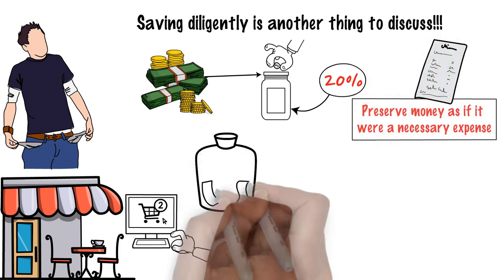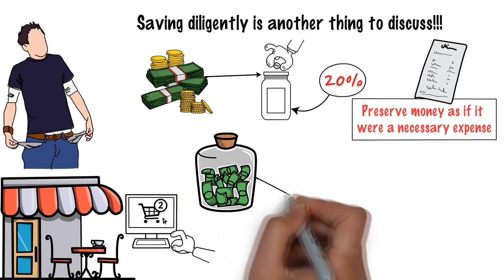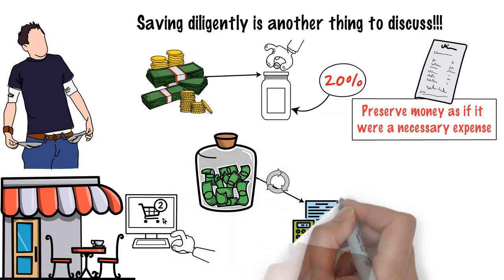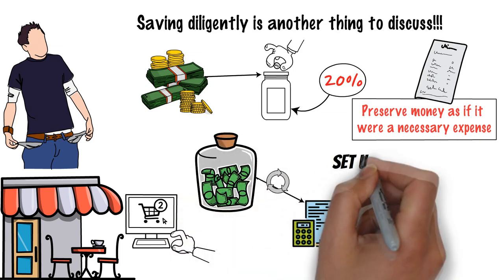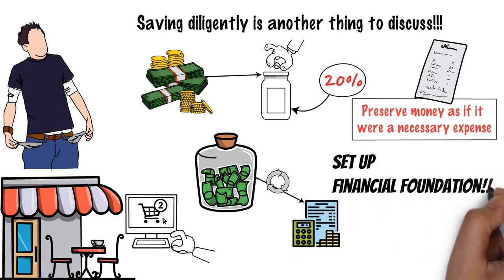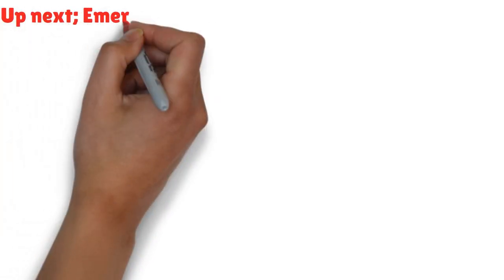For consistency and ease, think about setting up automatic transfers to different bank accounts. With this, we have finally set up our financial foundation. Up next: emergency fund.